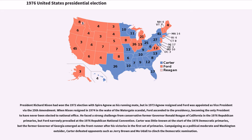Ford faced a strong challenge from conservative former Governor Ronald Reagan of California in the 1976 Republican primaries, but Ford narrowly prevailed at the 1976 Republican National Convention. Carter was little known at the start of the 1976 Democratic primaries, but the former governor of Georgia emerged as the frontrunner after his victories in the first set of primaries. Campaigning as a political moderate and Washington outsider, Carter defeated opponents such as Jerry Brown and Mo Udall to clinch the Democratic nomination.